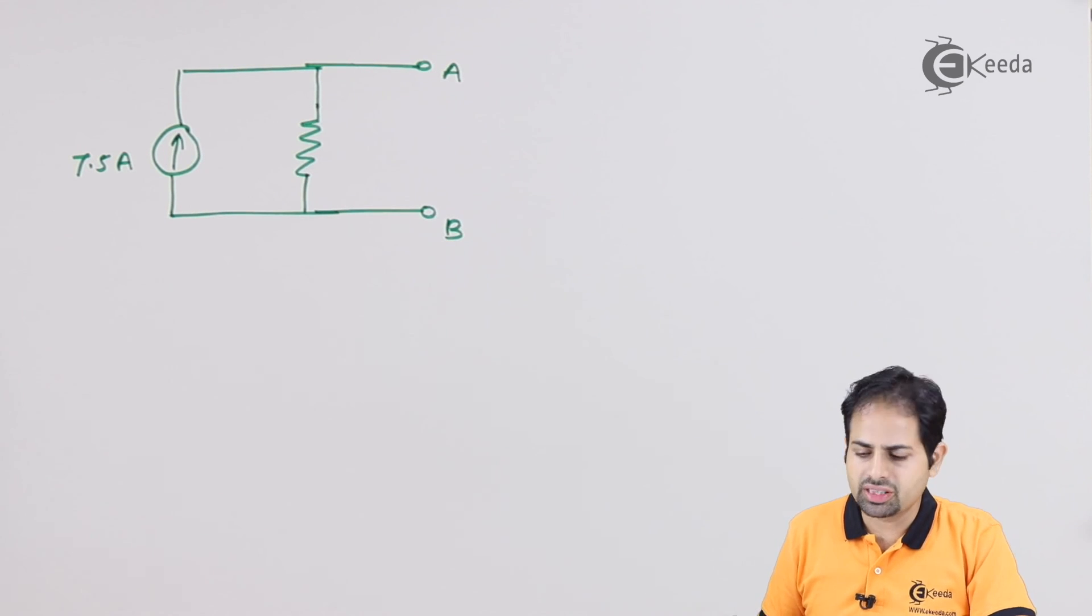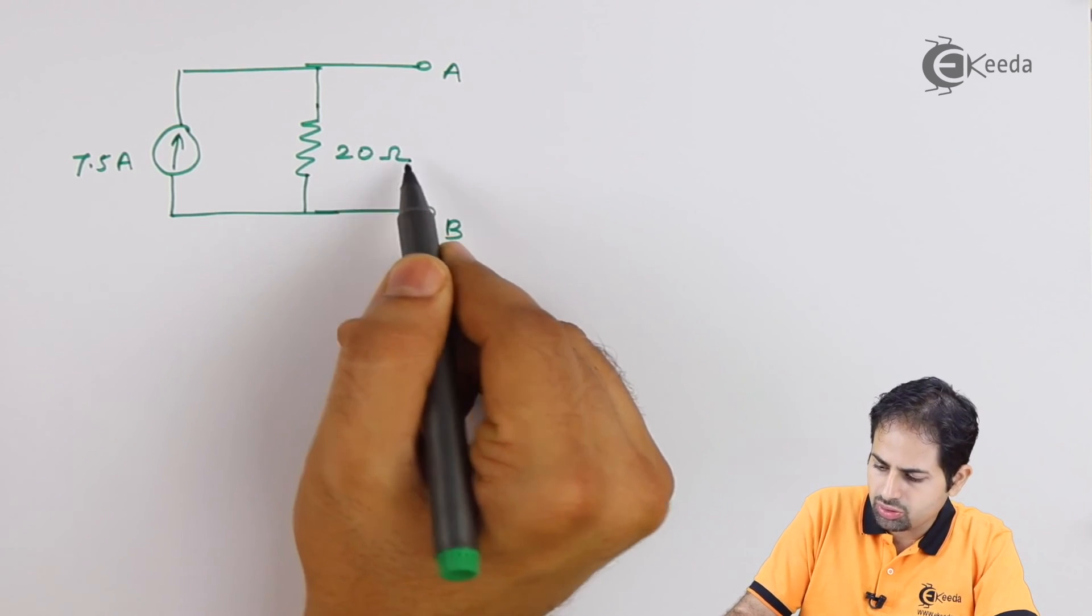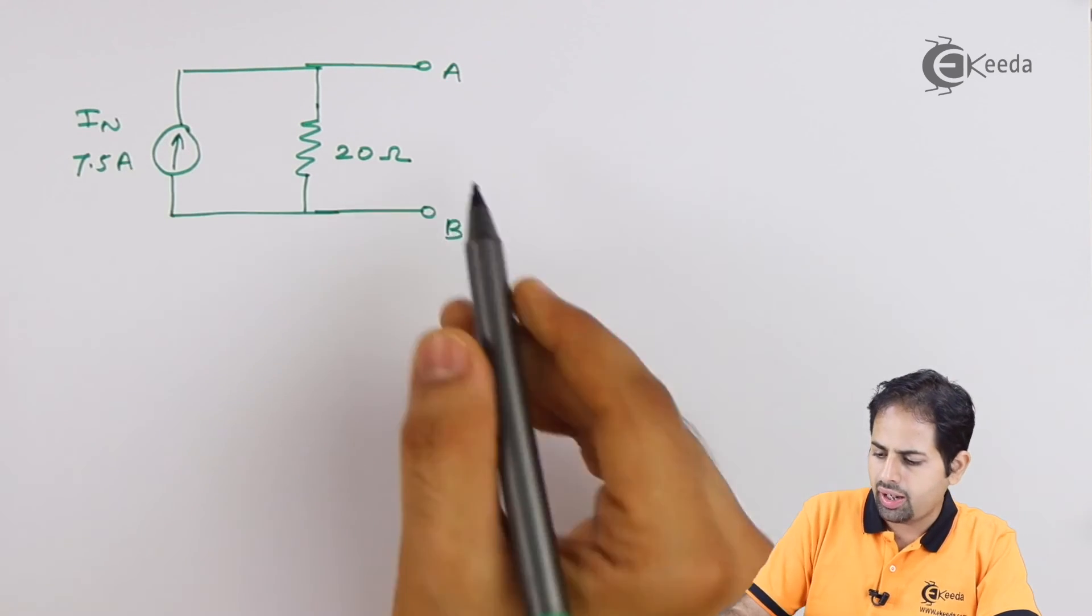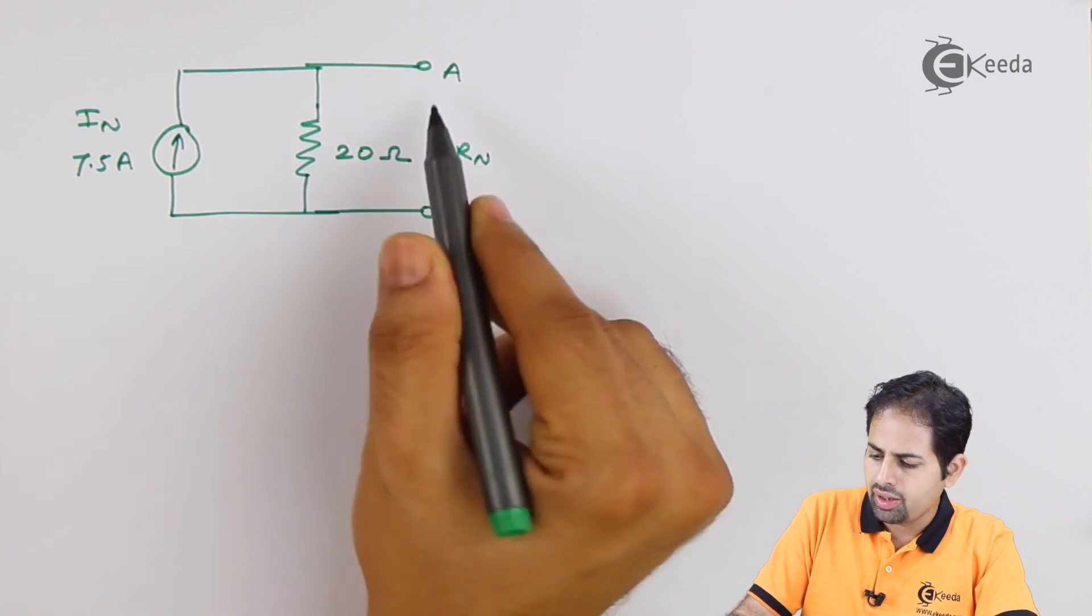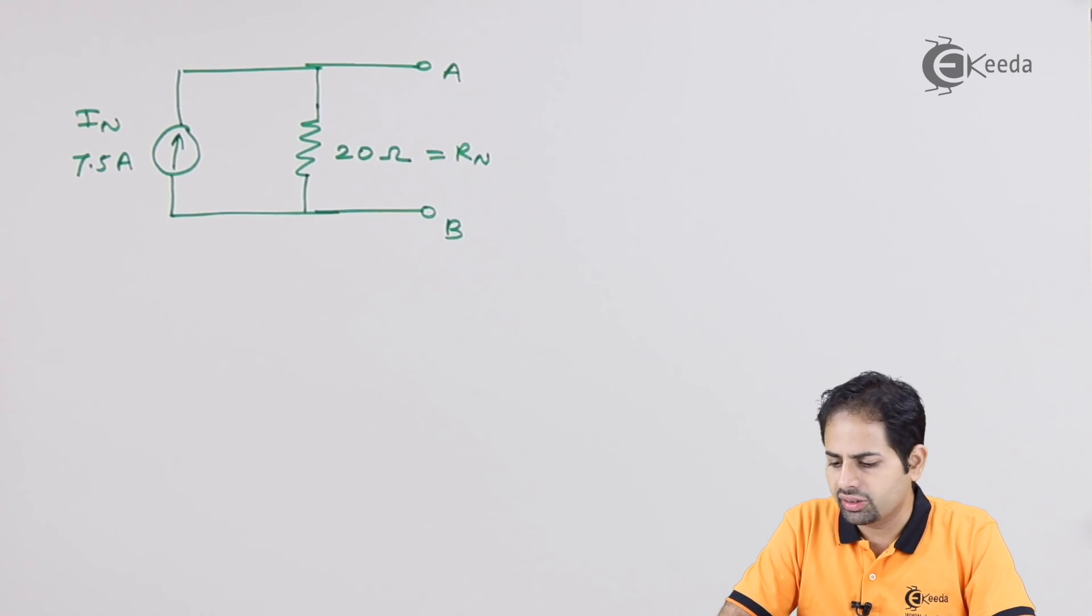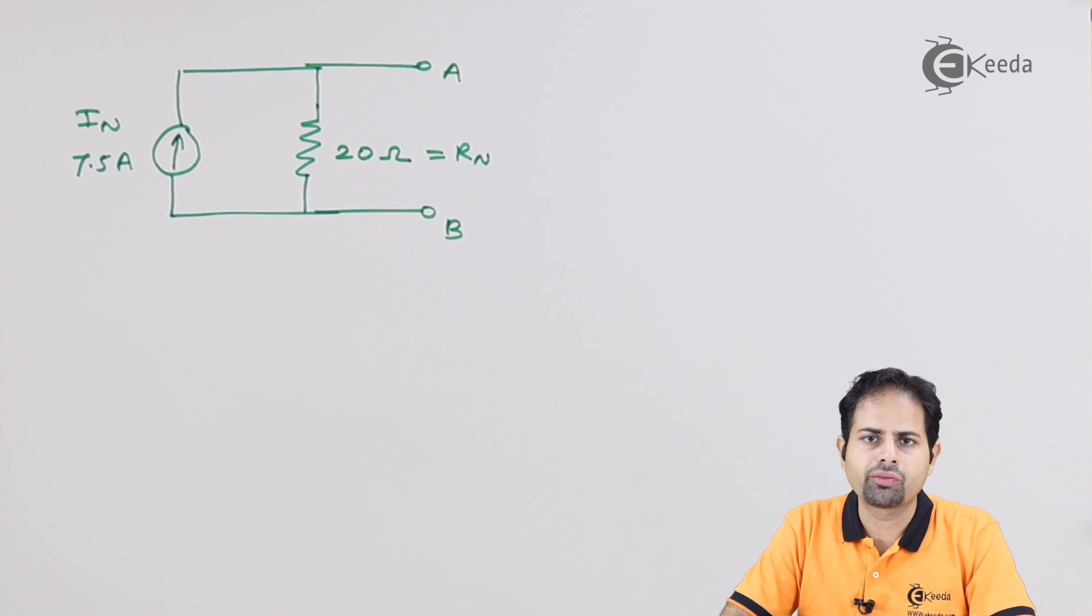And Norton's equivalent resistance, we got 20 ohms. So Norton's equivalent current, we can call it as In, and this is nothing but Rn. And across AB, we have simplified this circuit. And that is the end of our question.